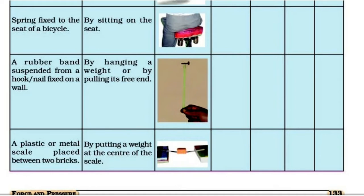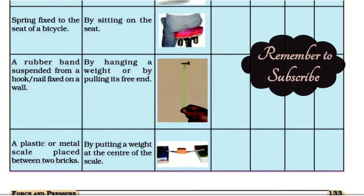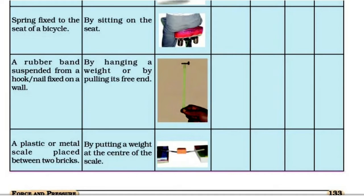Fourth case: a metal scale placed between two bricks, with a weight placed at the center of the scale. The two bricks support the scale from below and the weight is placed on top. This will change the shape of the scale, not its state of motion.